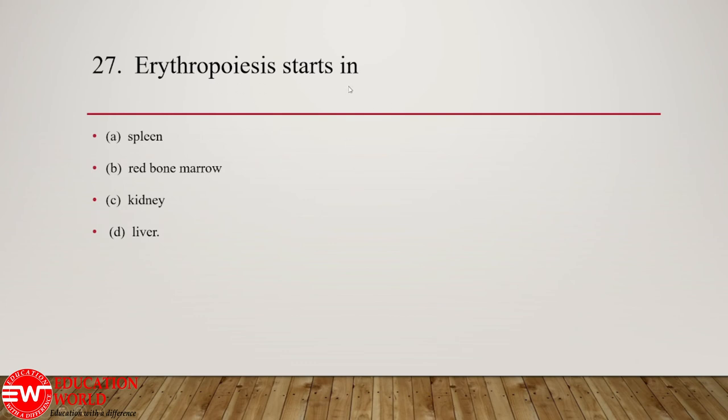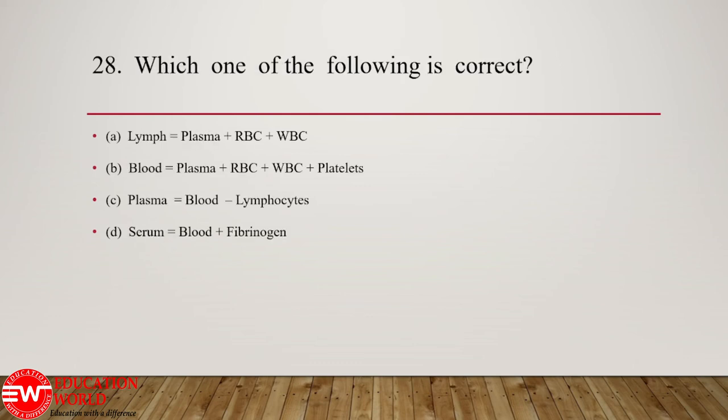Question number 27: erythropoiesis starts in — erythropoiesis means formation of RBCs. Primarily, erythropoiesis starts in the red bone marrow. Within the red bone marrow there are stem cells known as proerythroblasts or erythroblasts; these cells divide and reproduce to produce RBCs.